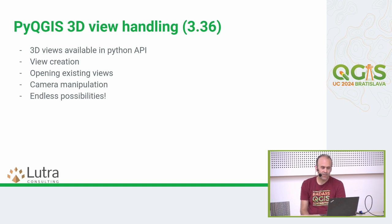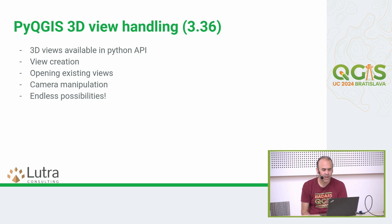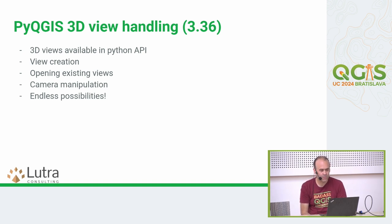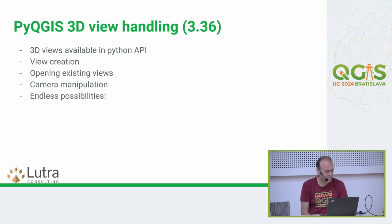Another big thing in 3.36 was the exposure of the Python API for 3D views. One can now create views using the Python API in plugins and manipulate existing ones — like opening or closing a view — and even manipulate the camera in those views. You can do tricks like opening a couple of views, linking their cameras together, or linking to the 2D view so that panning one view causes the other to follow.